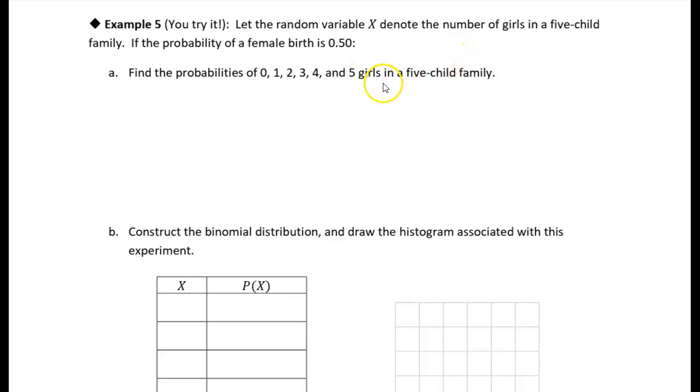So we're calling a success as a girl. And we have n trials because we have five births, five kids in the family. So the number of trials is five. The probability of success is 0.5. Probability of failure then would be 0.5.